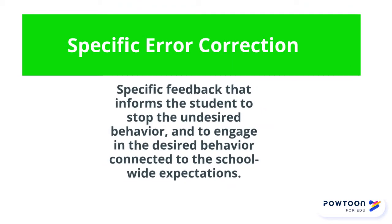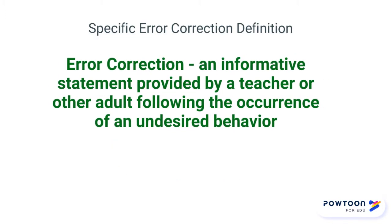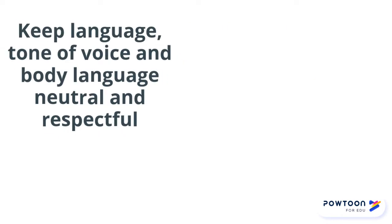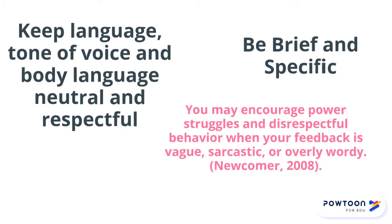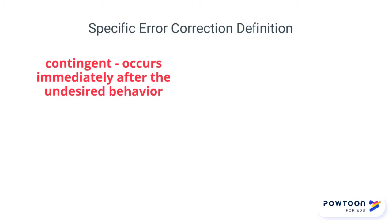Let's key in on specific error correction. When you're giving specific error correction, you're giving specific feedback to inform the student to stop undesired behaviors, how to engage in the desired behavior, and connecting that to your school-wide and classroom expectations. Error correction is an informative statement provided by a teacher or another adult following the occurrence of an undesired behavior. It is important to keep your language, tone of voice, and body language neutral and respectful, and to be brief and specific. Vague, sarcastic, or wordy feedback can encourage power struggles and disrespectful behavior. Your correction should be contingent — occurring immediately after undesired behavior.